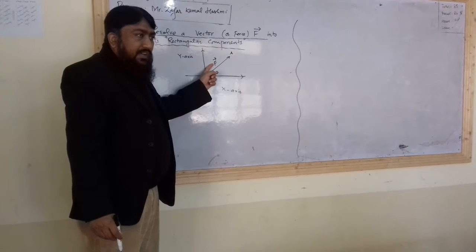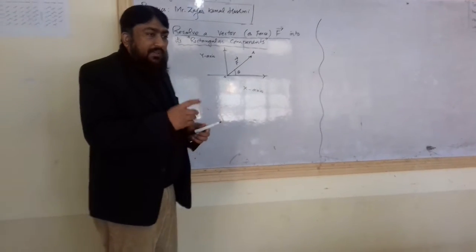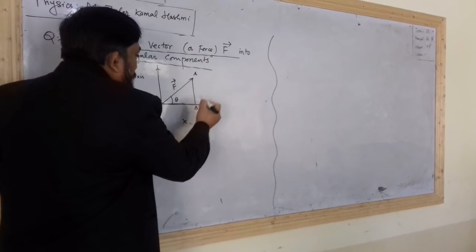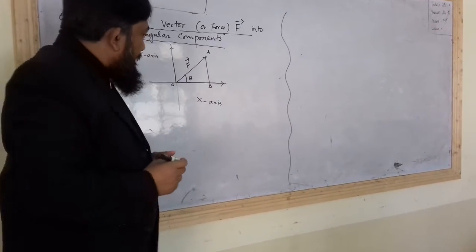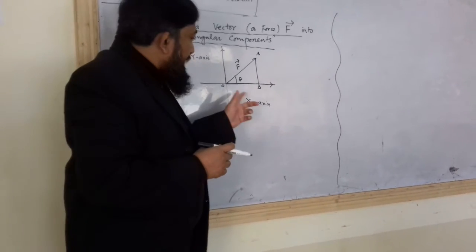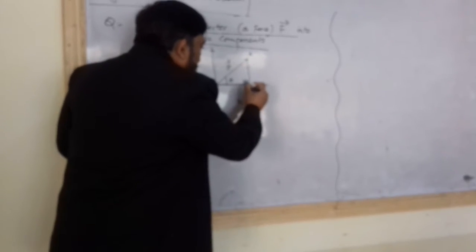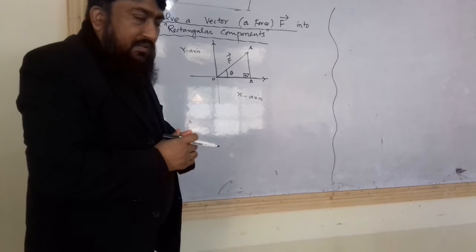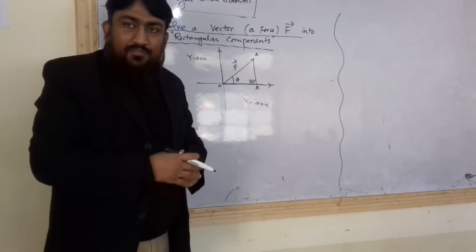This force or vector F is to be resolved into its rectangular components. So we will do it step by step. Step 1 is, I draw a perpendicular from point A. From point A, I draw a perpendicular AB on X axis. This is first step.